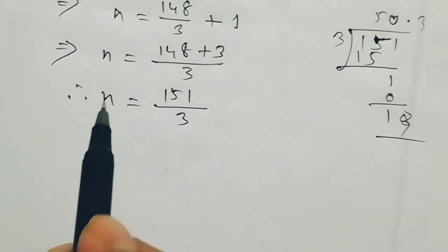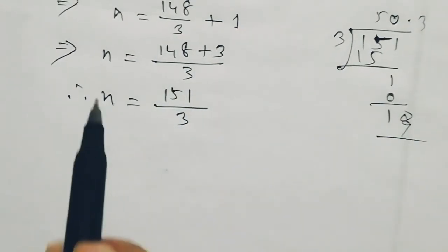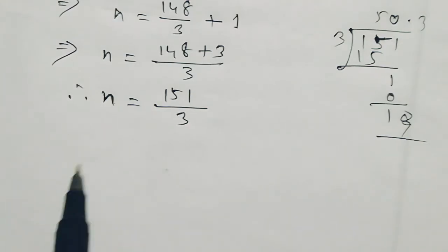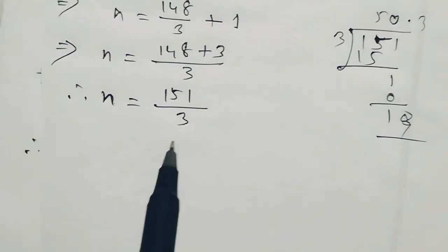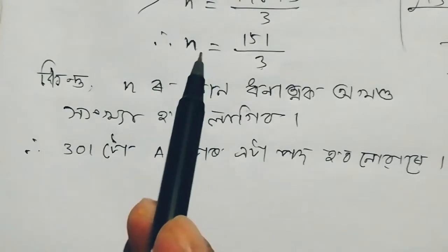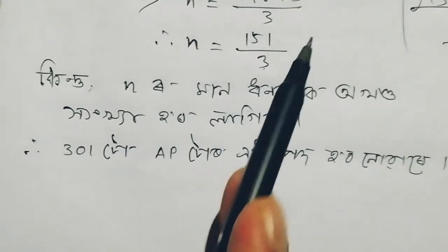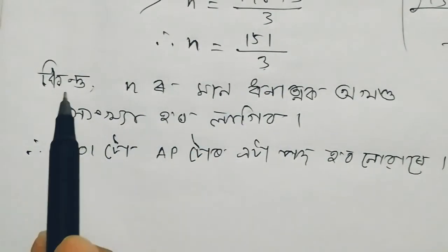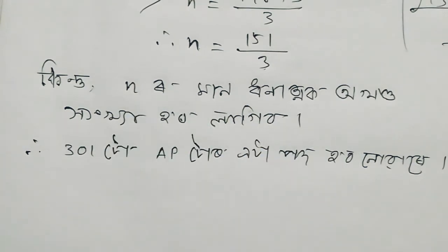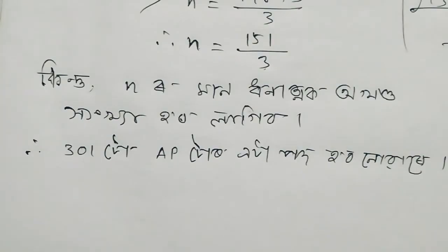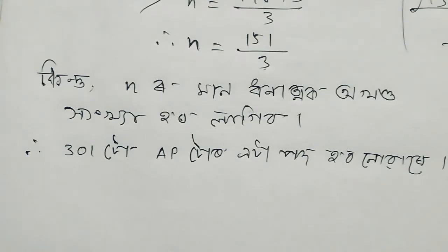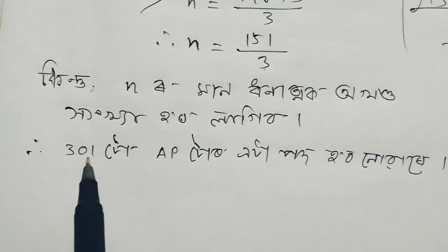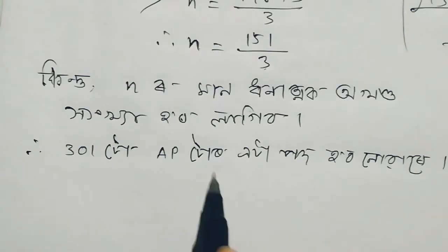So the value of n is equal to 151 by 3. Students can write that n is equal to 151 by 3. Since 151 by 3 is not a whole number, 301 is not a term of this sequence. So n equals 301 by 3, which equals 552 by 3, equals 762 by 3 — not an integer.